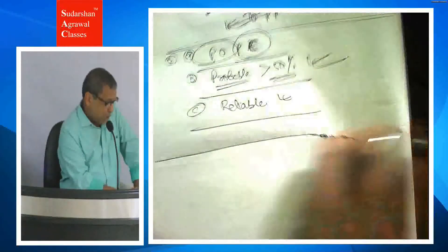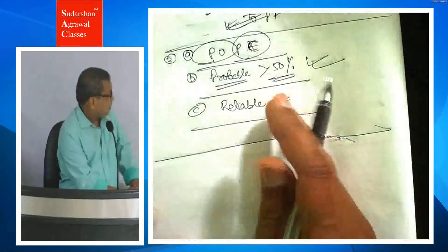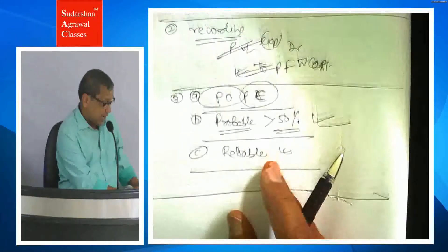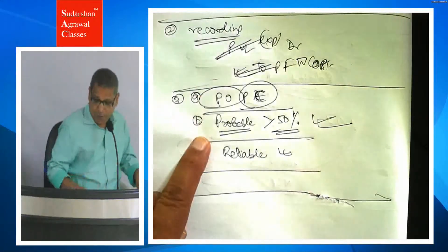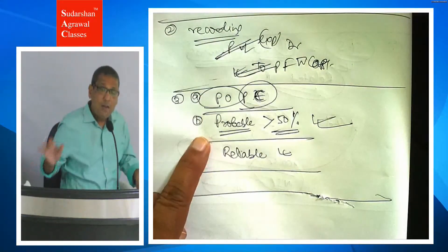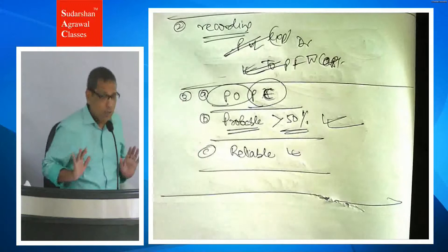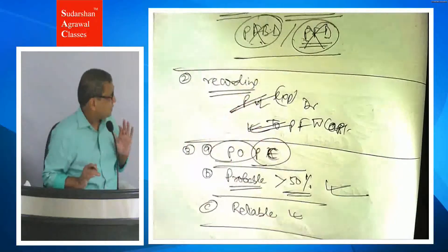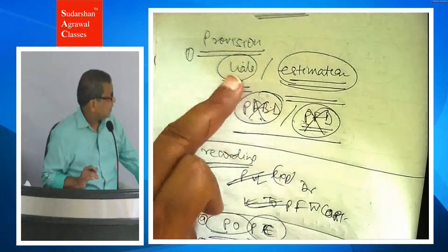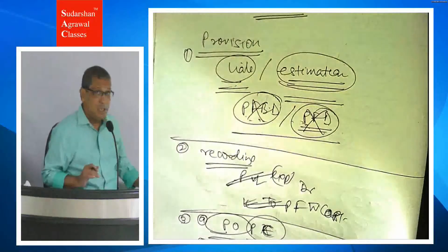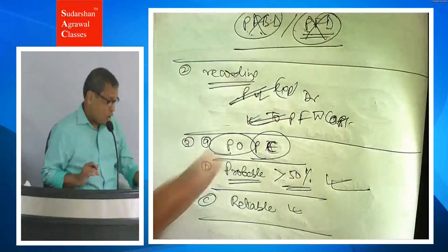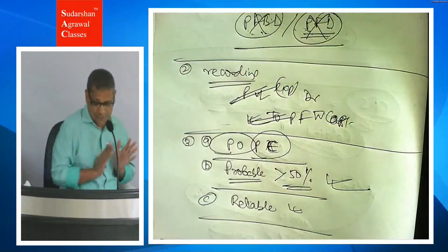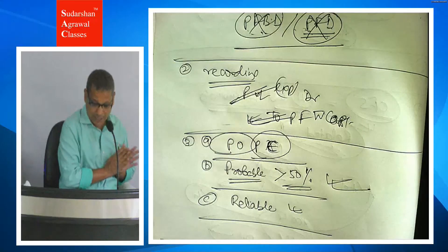So the point is: if we want to write provision in the books, we need to fulfill these three criteria. Once those three criteria are fulfilled, we pass the journal entry of provision. The provision appears on the liability side of the balance sheet, and on the expense side of the P&L.